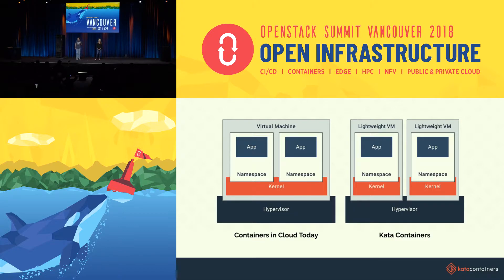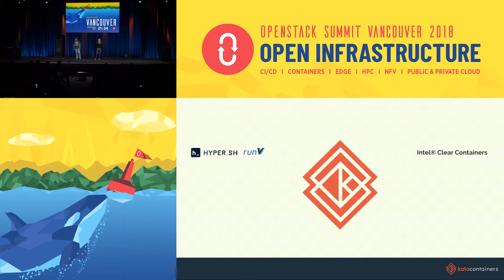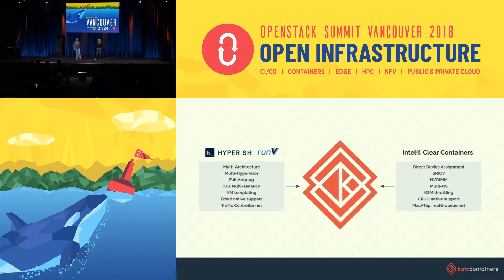On the other hand, Kata Containers is a real VM. That means hardware device pass-through, heterogeneous kernels, and other accelerating technologies developed for traditional VMs can be applied to Kata Containers as well. Kata Containers came from two projects developed by Intel and Hyper.sh: Clear Container and Runv. Last December, after the OpenStack Summit, we merged the two projects into Kata Containers to help users adopt the technology.